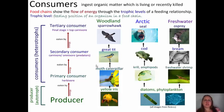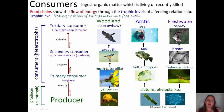Consumers ingest organic matter which was recently living or recently killed. A food chain shows the flow of energy through what we call trophic levels of a feeding relationship. A trophic level is just the feeding position of an organism in a food chain. You start at the bottom with your producer — that's the first trophic level. Examples here include a yellow iris, a diatom or phytoplankton. The producer is eaten by a primary consumer, which is called an herbivore — that's your second trophic level.